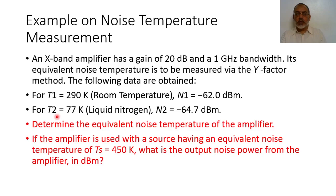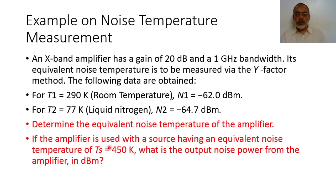When the amplifier is connected to the cold matched load at T2 equals 77 Kelvin, the output noise N2 equals minus 64.7 dBm. Note that this noise is less than N1 because minus 64.7 is more negative than minus 62 in dB. It is required to determine the equivalent noise temperature Te of the amplifier, and the output noise power when the amplifier is used with a source having an equivalent noise temperature T_source equal to 450 Kelvin.